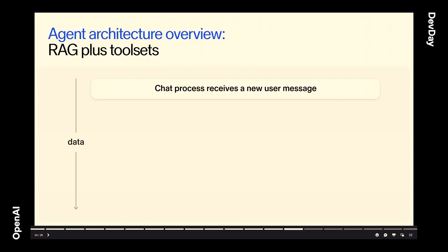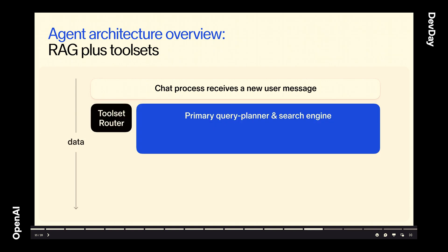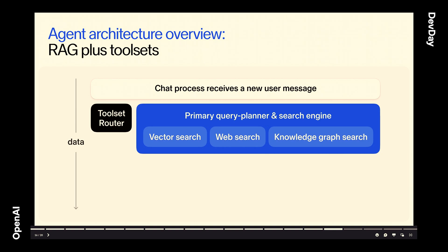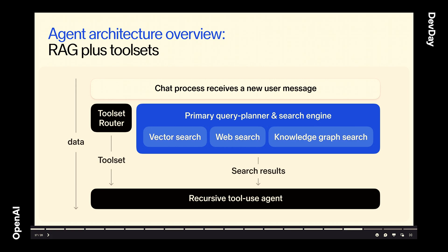Tying it all together: when our backend receives a new message from the user, we kick off in parallel the toolset router and our primary query planner and search engine. The search engine is a default toolset that's the bread and butter of SANA AI — it has vector search, web search, and knowledge graph search, pulling unstructured and structured data from across the company's knowledge. Assuming a toolset is selected, it goes to our recursive agent along with those search results. This is how we handle requests like analyzing a meeting and taking that unstructured data and putting it into a structured place in Salesforce.